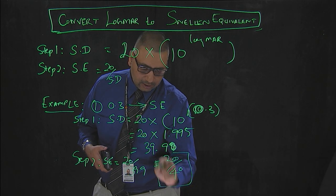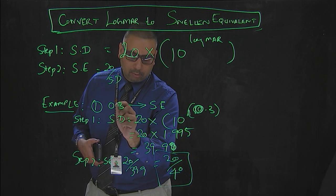The 20/40 is your Snellen equivalent of 0.3 log MAR value. Log MAR value 0.3 is equivalent to Snellen acuity of 20/40.